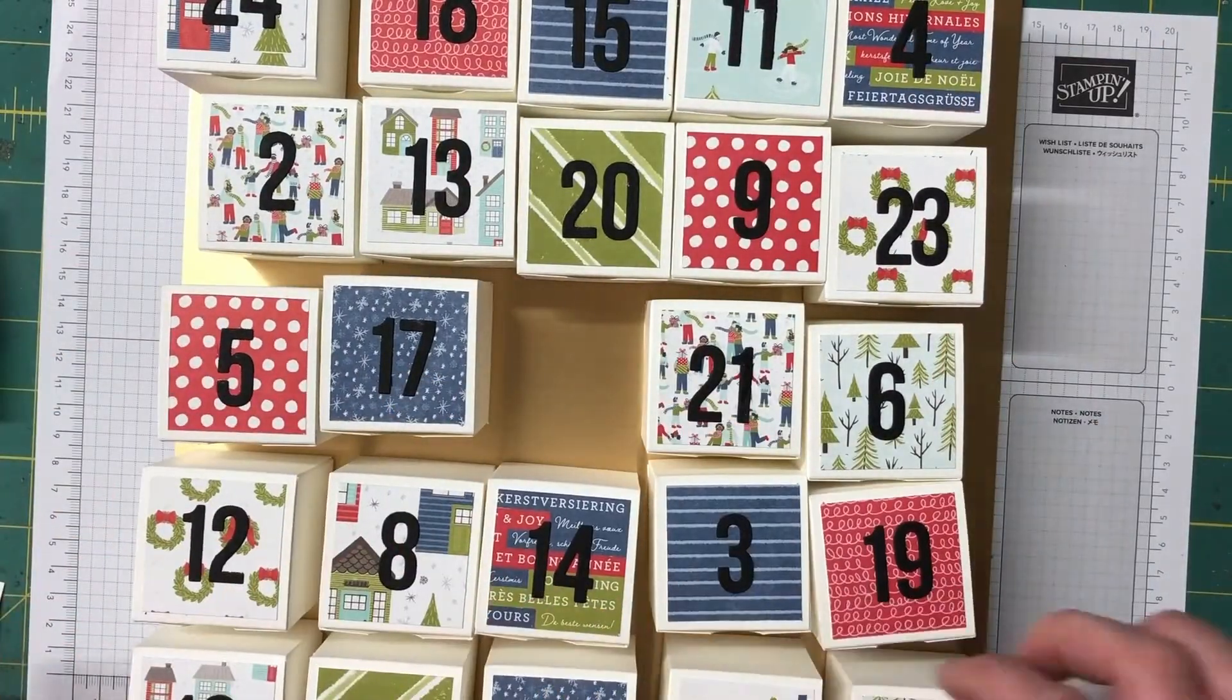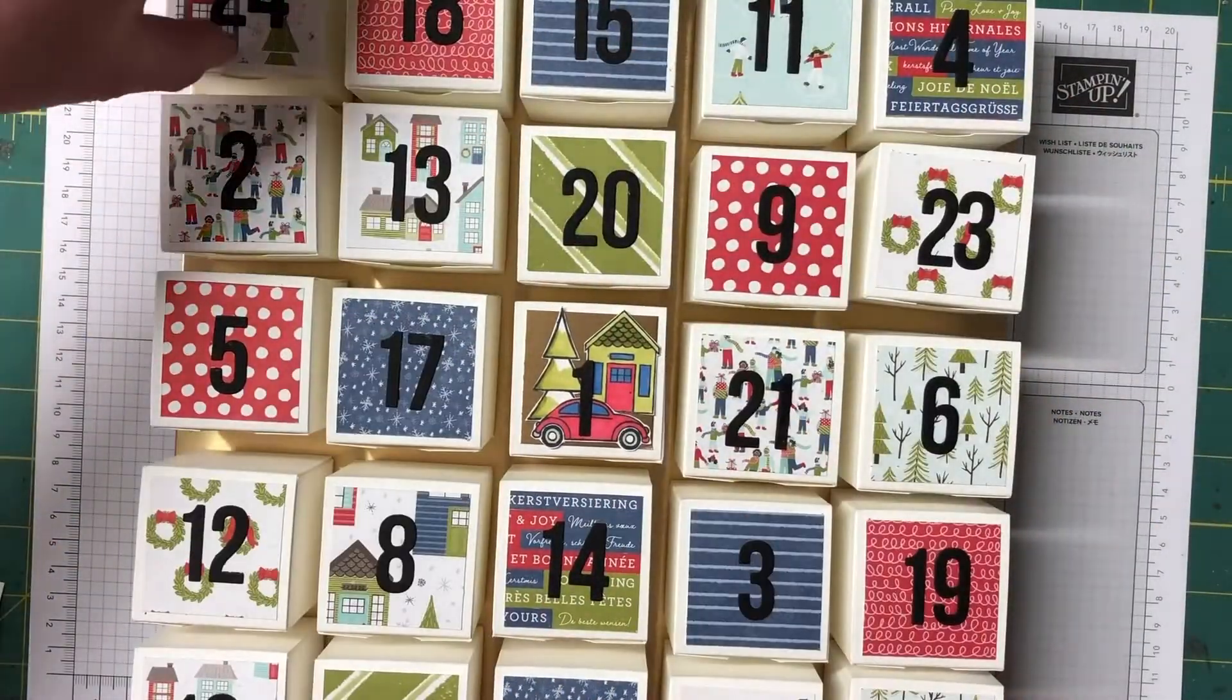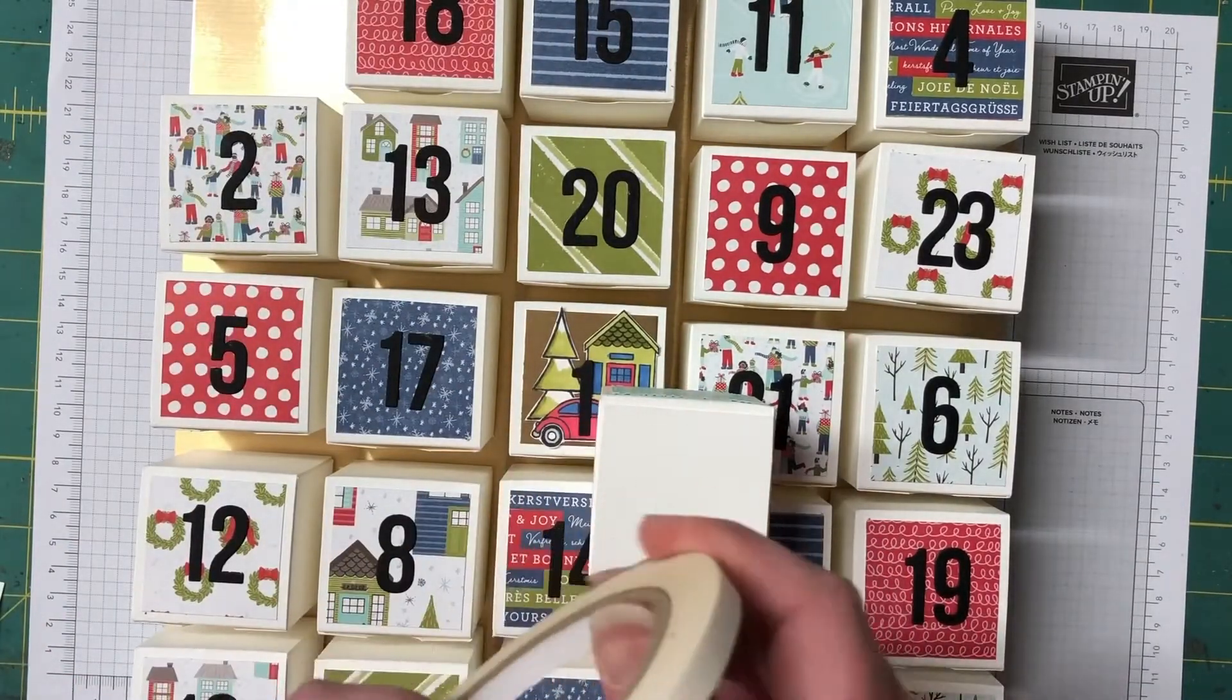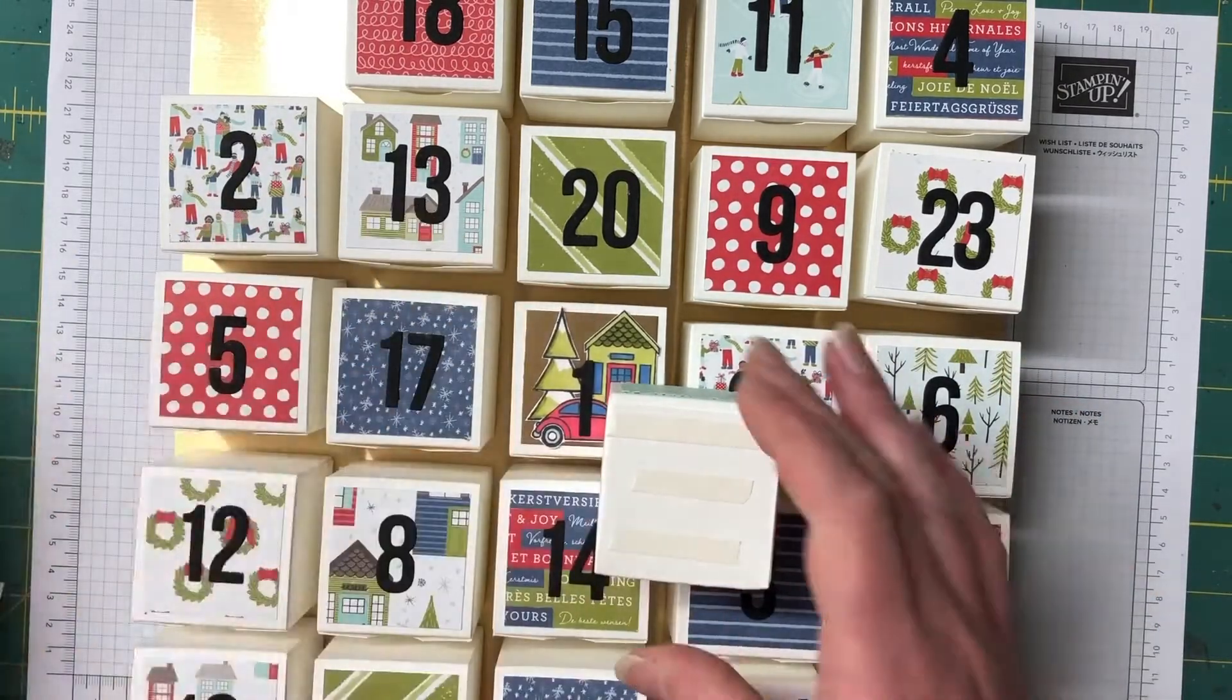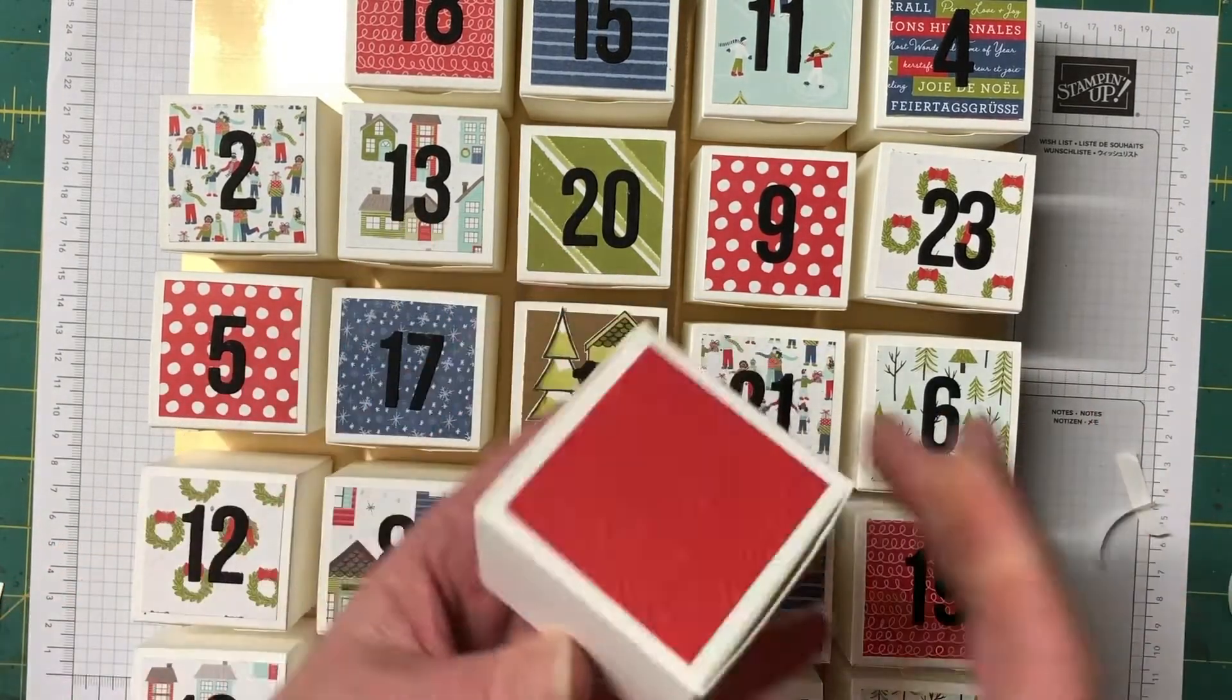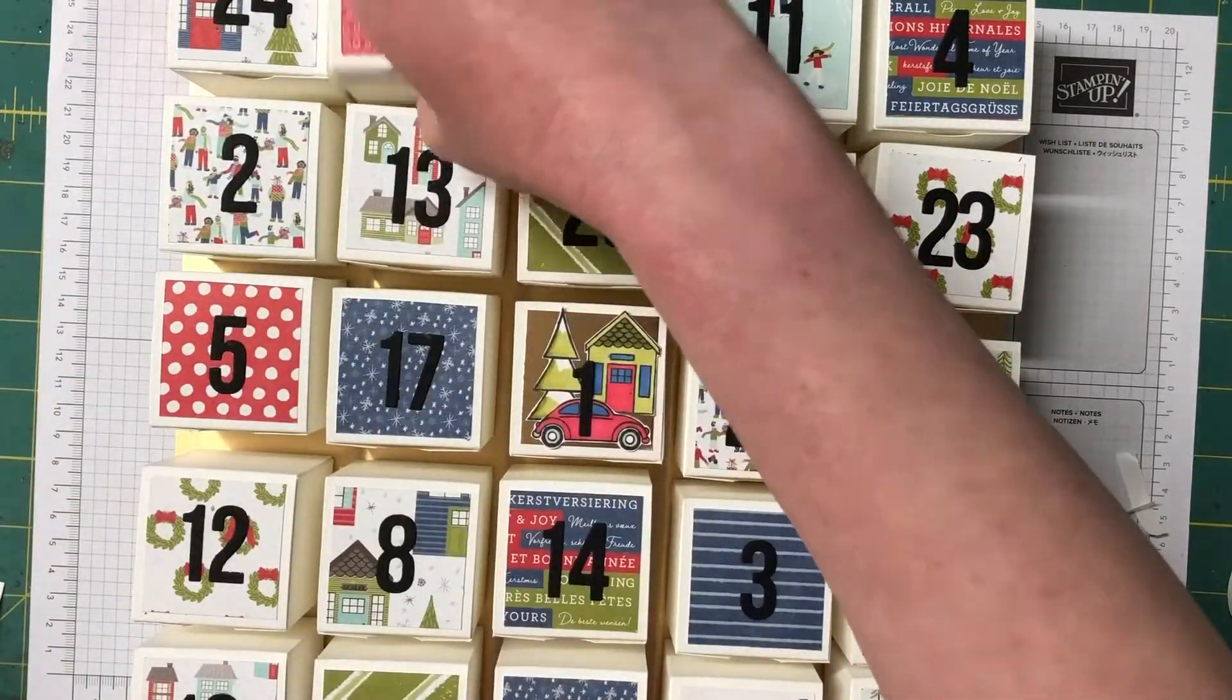Now just before the music starts all we're going to do is we're going to start gluing these boxes down and I'm using tear and tape to do that. Make sure you get them in place first before putting them down into place and what I also did was I made sure that I didn't stick down completely. The boxes I just placed them down so I could pick them up and move them if needed. So once you have them all in place make sure you press them down well and this box should last if you store it correctly should last a long time.